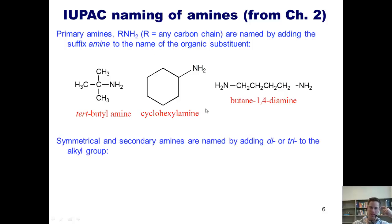Symmetrical secondary amines are named by adding di or tri to the alkyl group. Thus, if I've got a nitrogen stuck to two ethyl groups, for example, I would call it diethylamine. A nitrogen stuck to three ethyl groups would be called triethylamine.